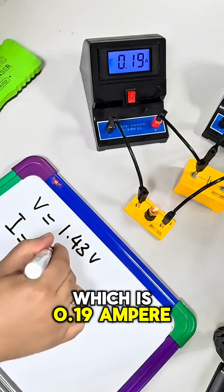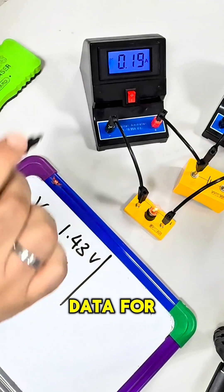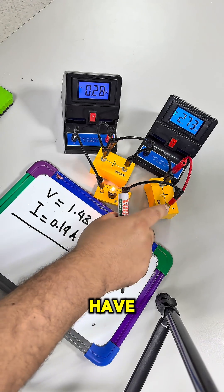The current is 0.19 ampere, and these are important data for the first experiment.